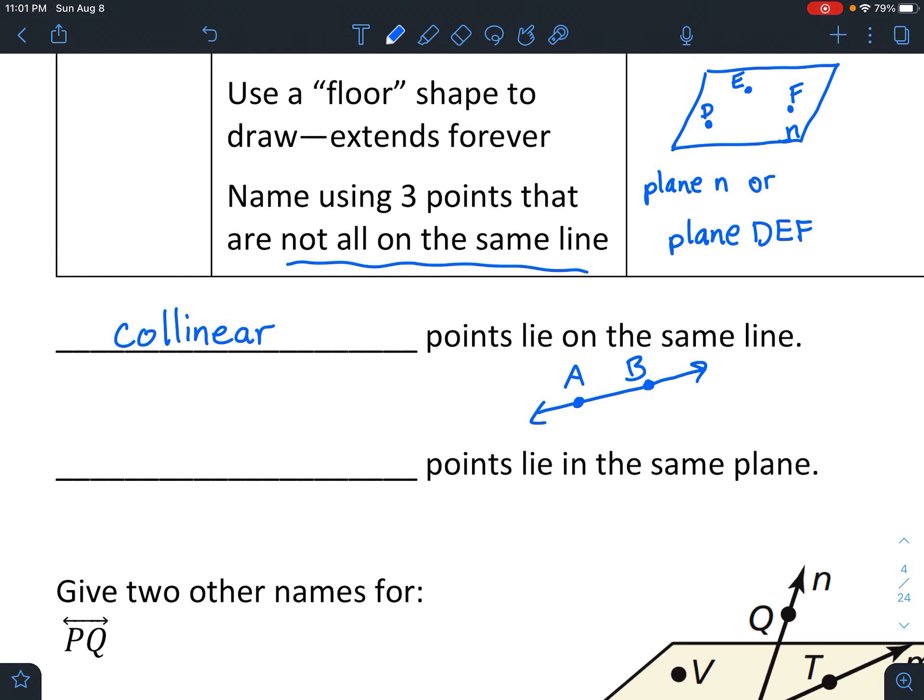And then coplanar are points that lie in the same plane. And maybe we'll just talk about some of the ones in this little diagram. So you can see V and S, they all lie in the same plane, so they are coplanar.